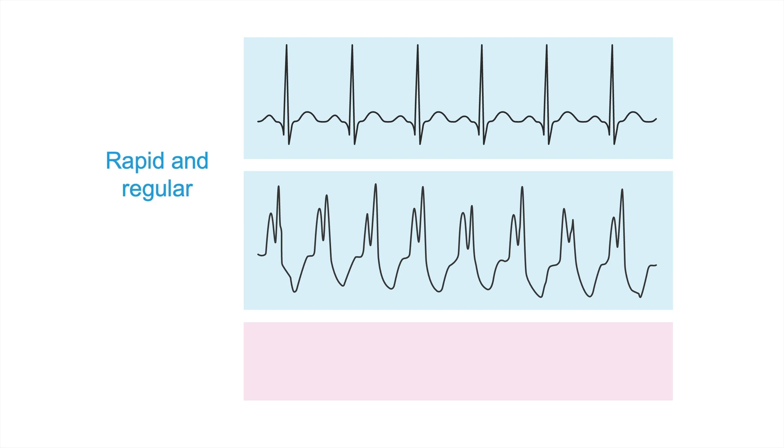What do I mean by regular? Well, regular means that the distance between the QRS complexes is constant. This distance is the same as this one, as this one, as this one, and so forth. And the same holds true for the tachycardia below.